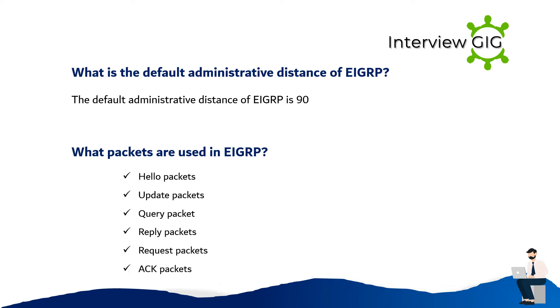What is the default administrative distance of EIGRP? The default administrative distance of EIGRP is 90.